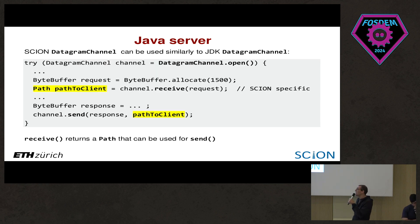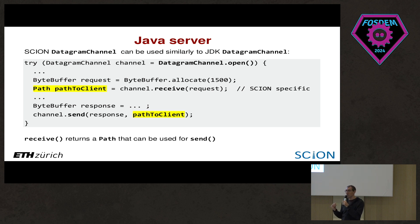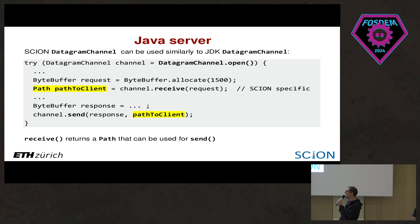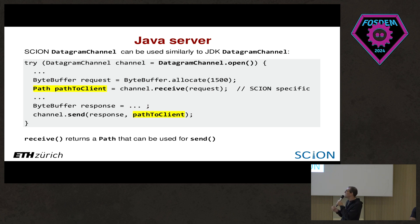On the server side, it is a little different from the native Java implementation: the receive method doesn't return an InetSocketAddress but a path object. The path object contains the InetSocketAddress from the client, but also the full path that the packet actually took through the internet. You can then use this path to send a response back to the client — the idea in SCION is that you normally send the reply back the same route, which is faster since the server doesn't need to look up paths to the client.